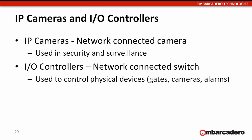We're going to take a look at IP cameras and I/O controllers. IP cameras are network connected cameras used in security and surveillance, whether at your home, a business, or for monitoring someone. I/O controllers, on the other hand, are network connected switches connected to the Internet and used to control physical devices such as gates, cameras, or alarms.